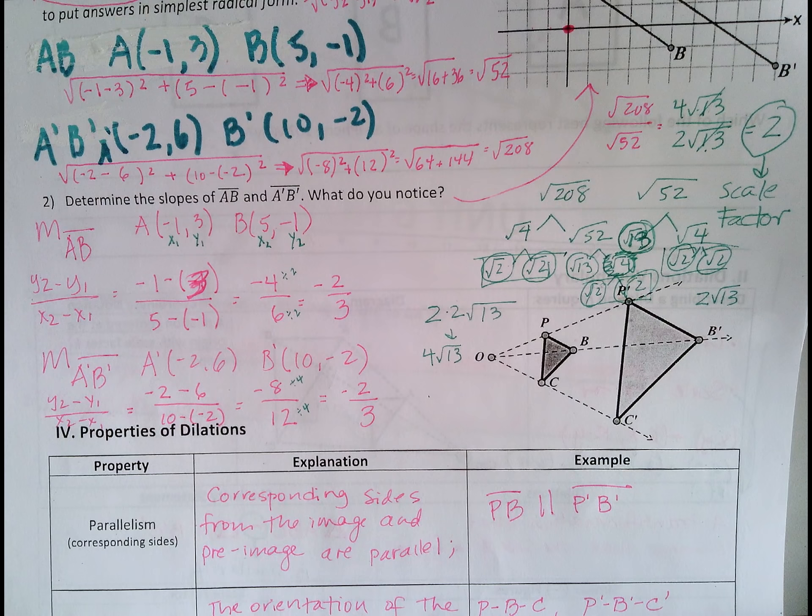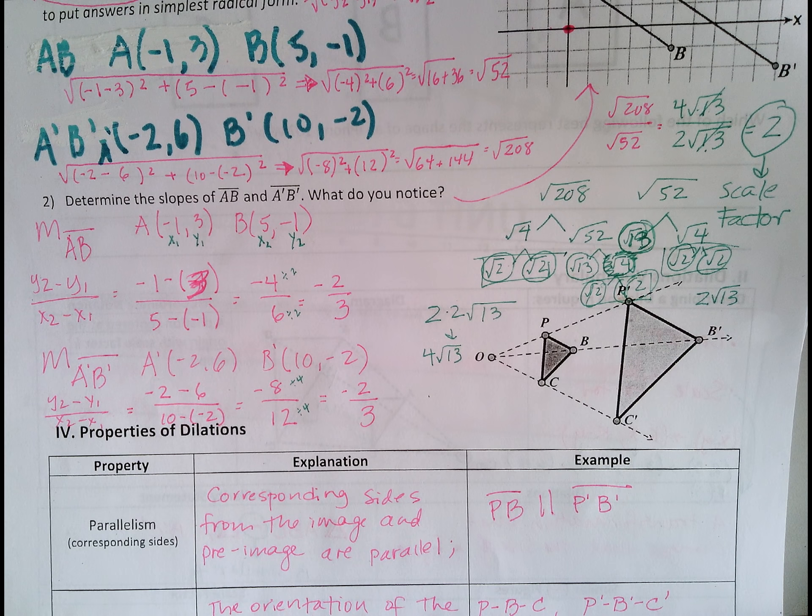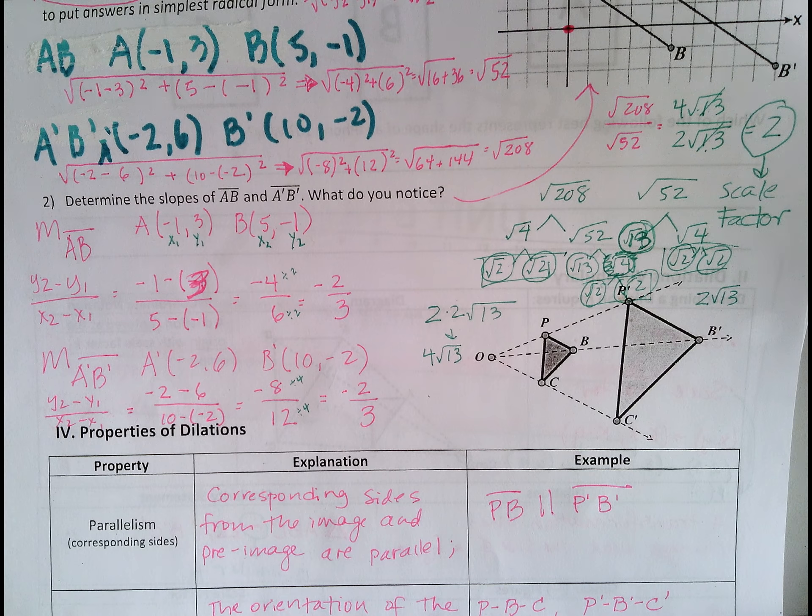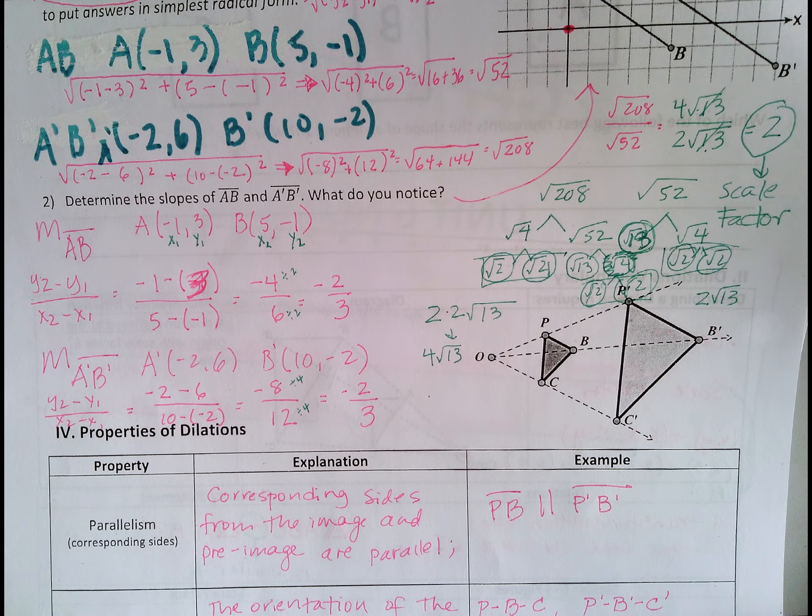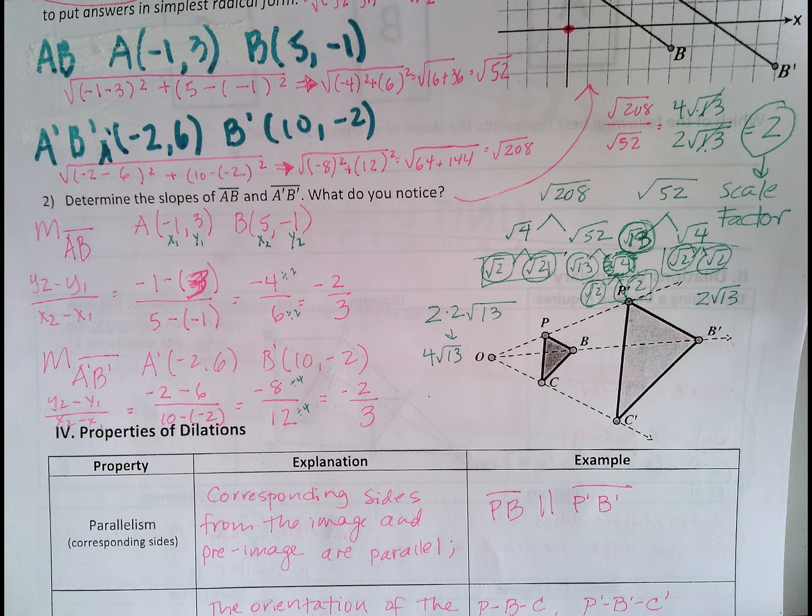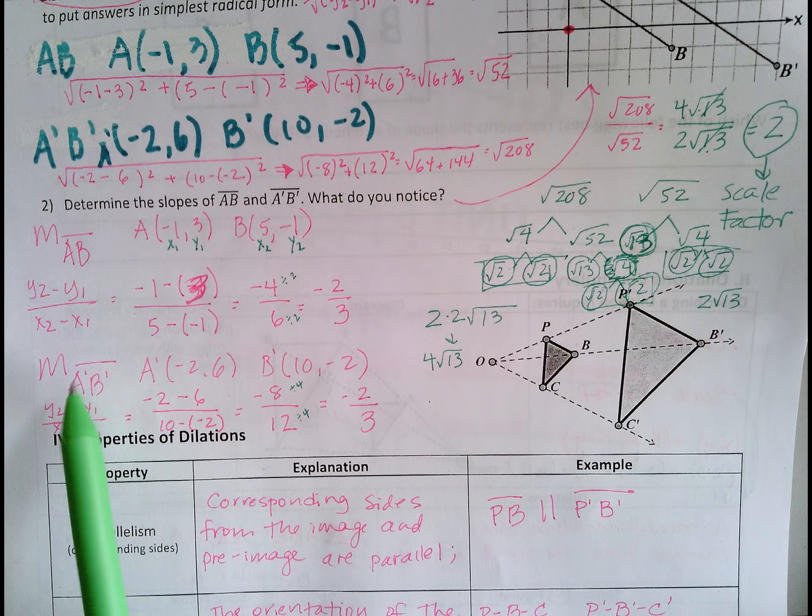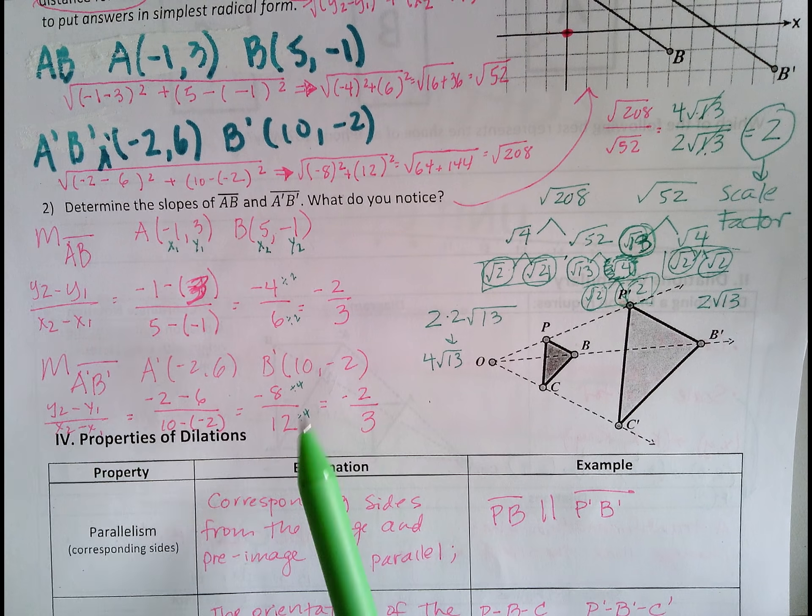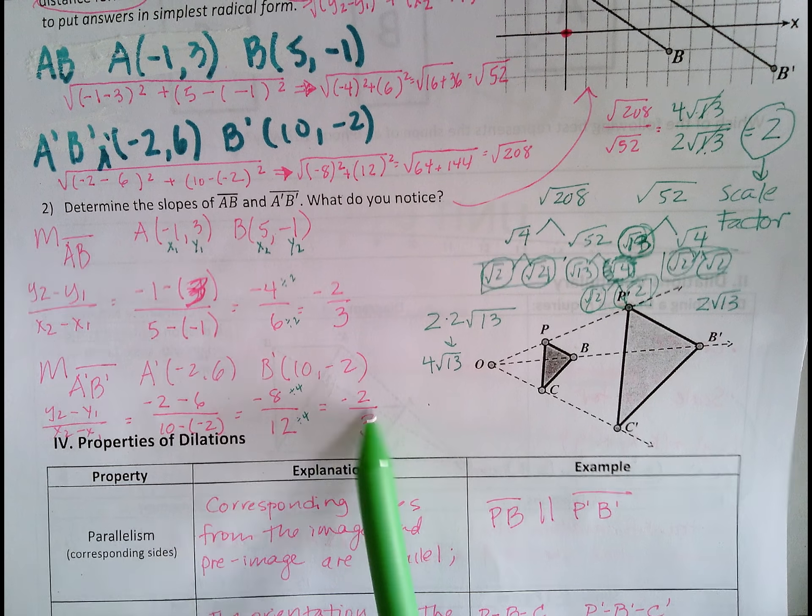It says determine the slopes of AB and A'B', what do you notice? So I did that step for us as well, and you will need to copy this down and make sense of it. So I found the slope of AB and A'B', and what I noticed is that the slopes are the same.